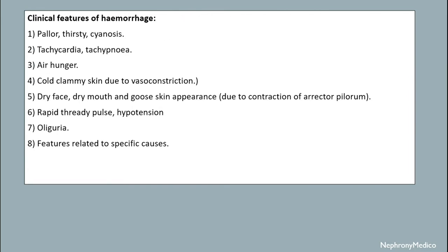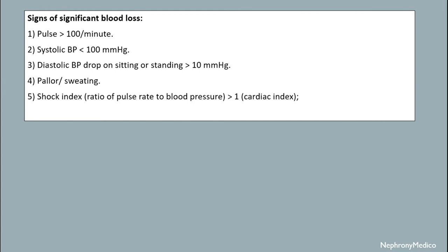Clinical features of hemorrhage include pallor, thirst, cyanosis, tachycardia, tachypnea, air hunger, cold clammy skin due to vasoconstriction, rapid thready pulse, hypotension, oliguria, and features related to specific causes.